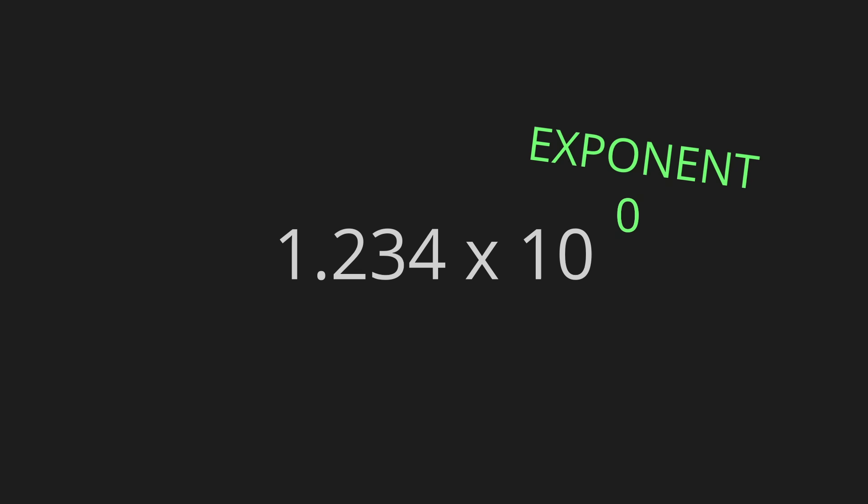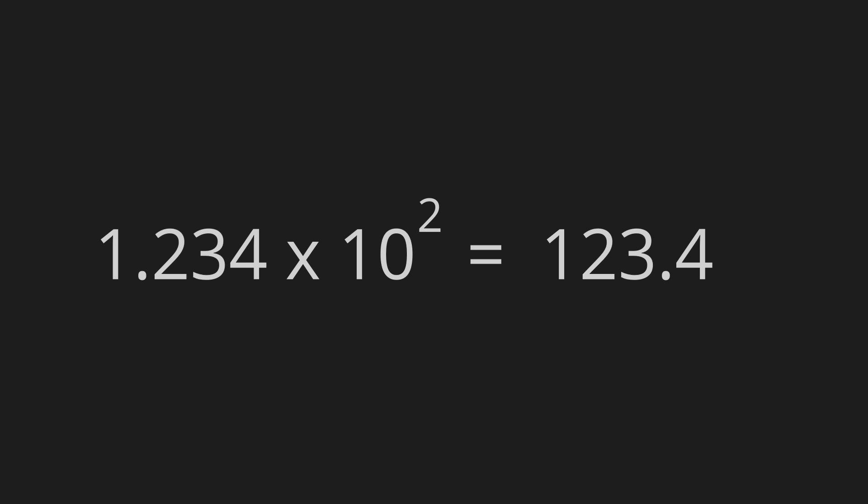But with scientific notation, we can't move the decimal point. The significand always has to begin with one digit followed by a decimal point. So the size of whatever number we're storing has to be determined not by the position of the decimal point, but by the second important component: this exponent up here. If we take 1.234 and multiply it by 10 to the power of 2, we end up with 123.4. This is numerically identical to just moving the decimal point over by 2.